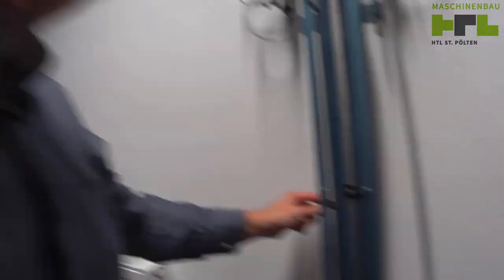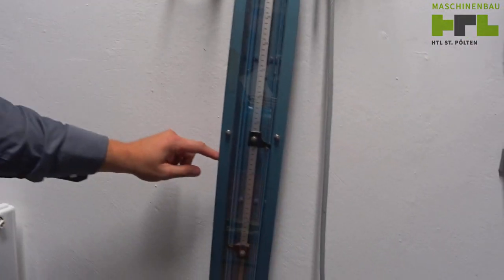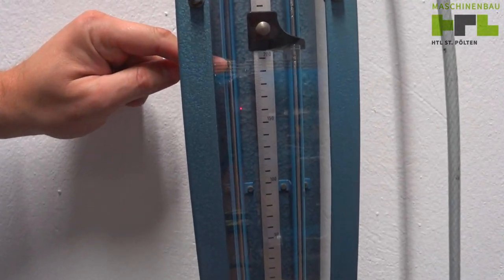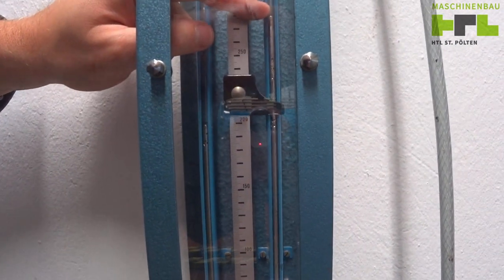Okay, good. We should see now a pressure difference, and we really do see a pressure difference. We see now this one column is here and the other column is here. Those two were previously leveled.